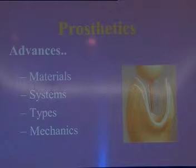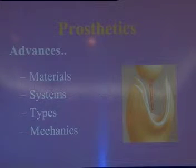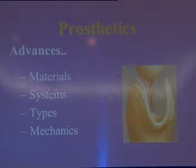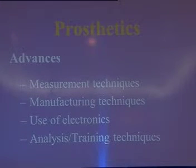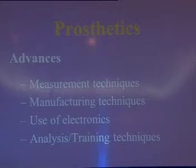What are the advances? Advances are mainly related to the materials being used for prosthesis, the systems being used for the conventional prosthesis, the different types of prosthesis, and the mechanics being used for the prosthesis. These are the areas where different kinds of advancement has taken place. The advances are also in relation to measurement techniques, manufacturing techniques, use of electronics, analysis and training techniques.